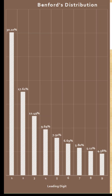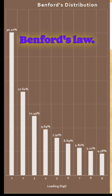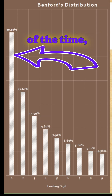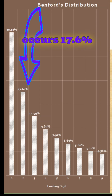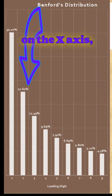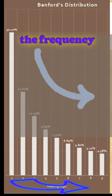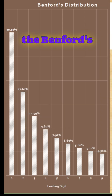This graph displays the logarithmic distribution of leading digits according to Benford's Law. As you can see, the probability of number 1 as a leading digit occurs 30.1% of the time, and the probability of digit 2 occurs 17.6% of the time, and so on. On the x-axis, as the leading digit increases, the frequency is decreasing — that is one way of remembering Benford's Law.